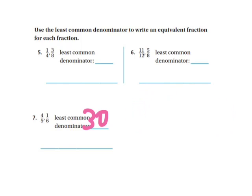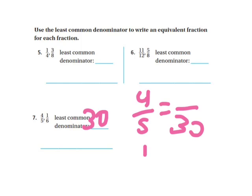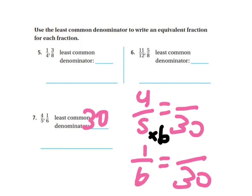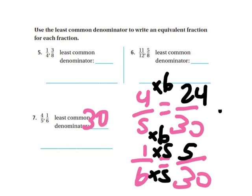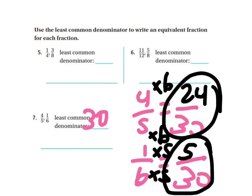I have my least common denominator, now I'm going to find equivalent fractions. 4/5 equals blank over 30, and 1/6 equals blank over 30. To get from 5 to 30, I need to multiply by 6. So I multiply the top by 6 and get 24/30. To go from 6 to 30, I have to multiply by 5, so I multiply the top by 5 also and get 5/30. These are my equivalent fractions, equivalent to 4/5 and 1/6, except now they have the same denominator — so if I wanted to add or subtract them, now I can.